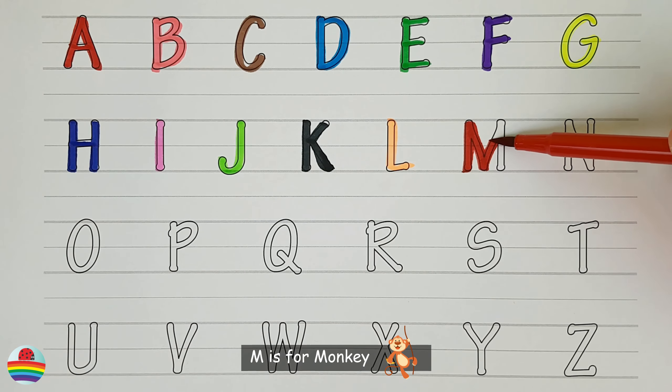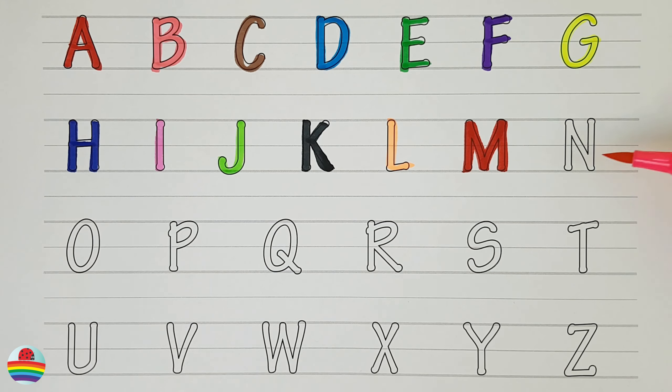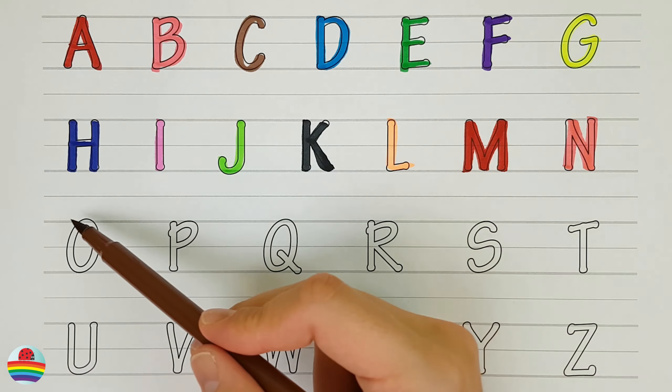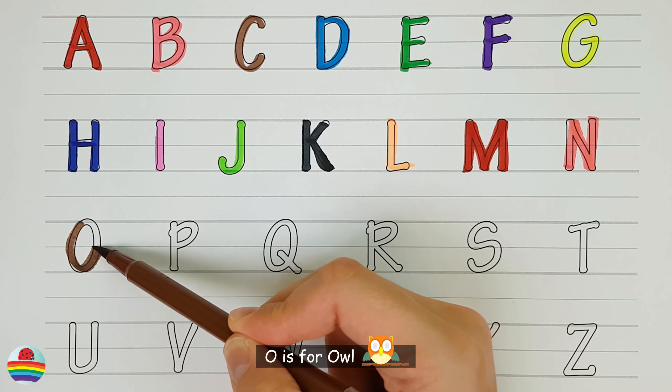M. M is for monkey. M. N. N is for nightingale. N. O. O is for owl. O.